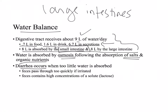Diarrhea occurs when water doesn't get absorbed. The feces pass through too quickly and absorption won't occur if the small or large intestines are irritated or inflamed — that could be caused by an autoimmune disease or an infection like a virus or bacterial infection. Diarrhea also occurs if the feces have a high concentration of solute like lactose, so if you can't digest milk sugar it can cause diarrhea.